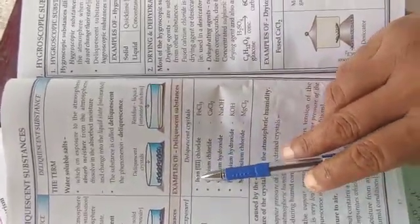The substance is called deliquescent and the phenomenon is called deliquescence. For example, iron chloride.